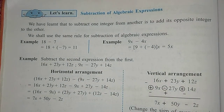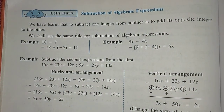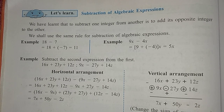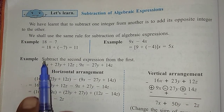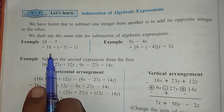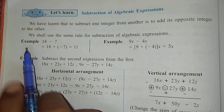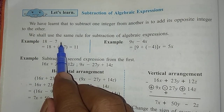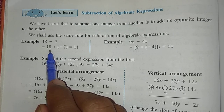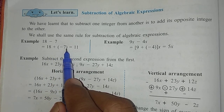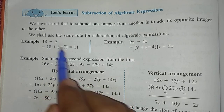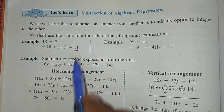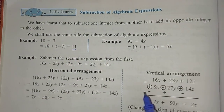The same rules we have to use here, and even whatever rules we have learnt in addition, some of those rules are applicable in subtraction also. For example, 18 minus 7 — we know how to do it — means 18 plus minus 7. This plus minus becomes minus, so 18 minus 7 gives answer 11.